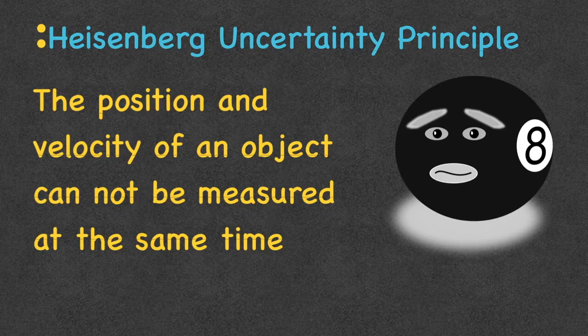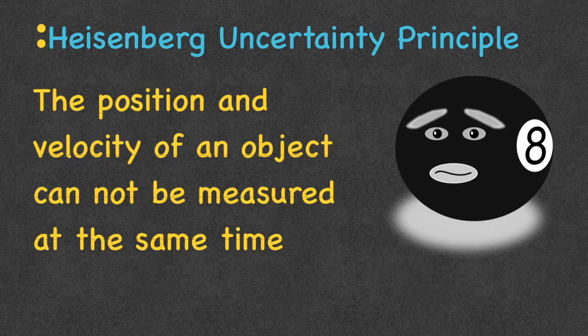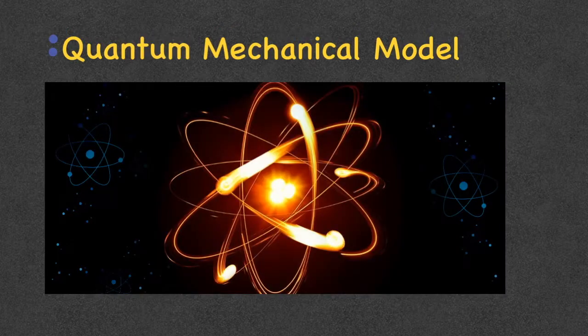The uncertainty principle states that the position and velocity of an object cannot be measured at the same time. For the electron, it's moving so fast that there's no way to figure out its speed and where it is at the same time — we can know how fast it's going or where it's located, but not both simultaneously. This uncertainty principle gave rise to the most modern model of the atom: the quantum mechanical model.